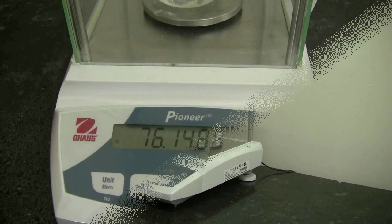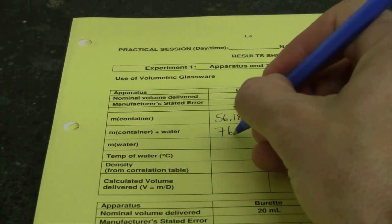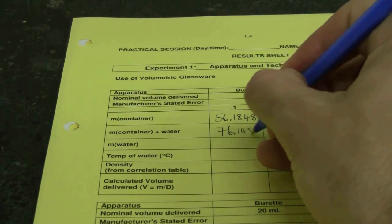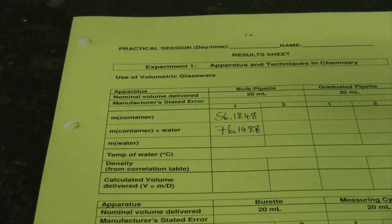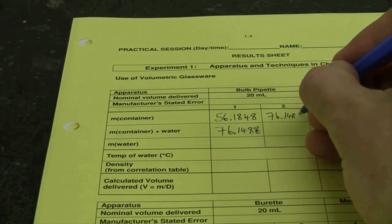Record that mass on your result sheet all four decimal places and note that to save you time in this experiment your final mass from the previous experiment can be your initial mass for your next trial so you can add your next 20 mls right on top of the previous 20 mls.